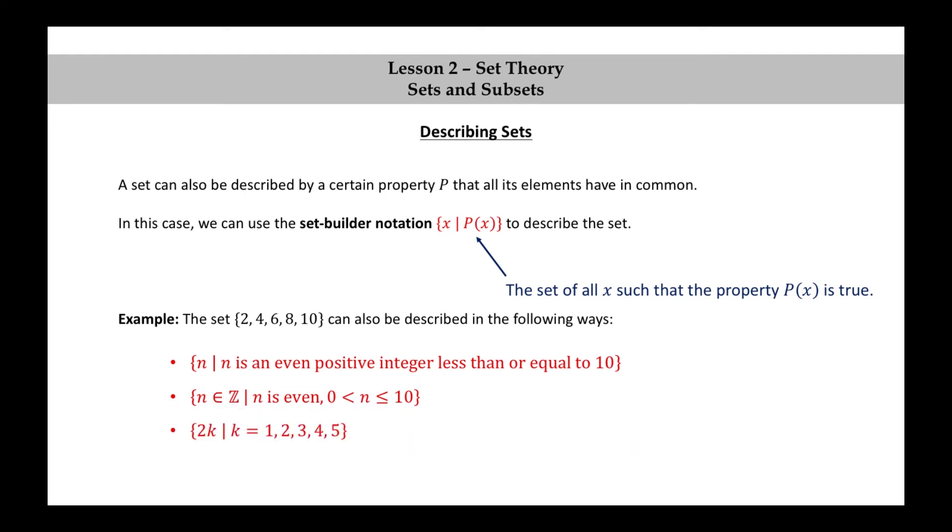Here's one more way to write this set. The set of 2K such that K is 1, 2, 3, 4, or 5.